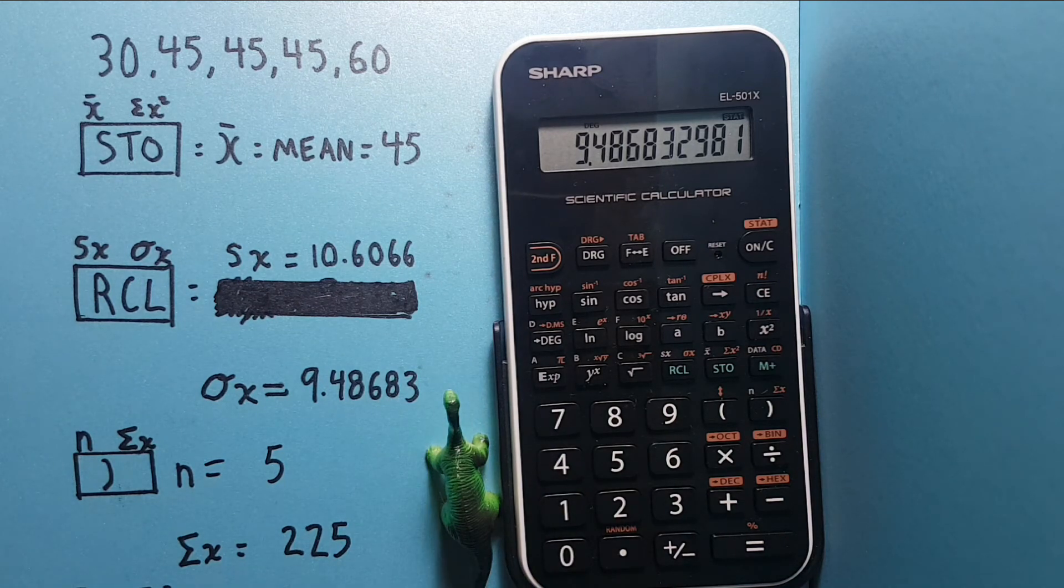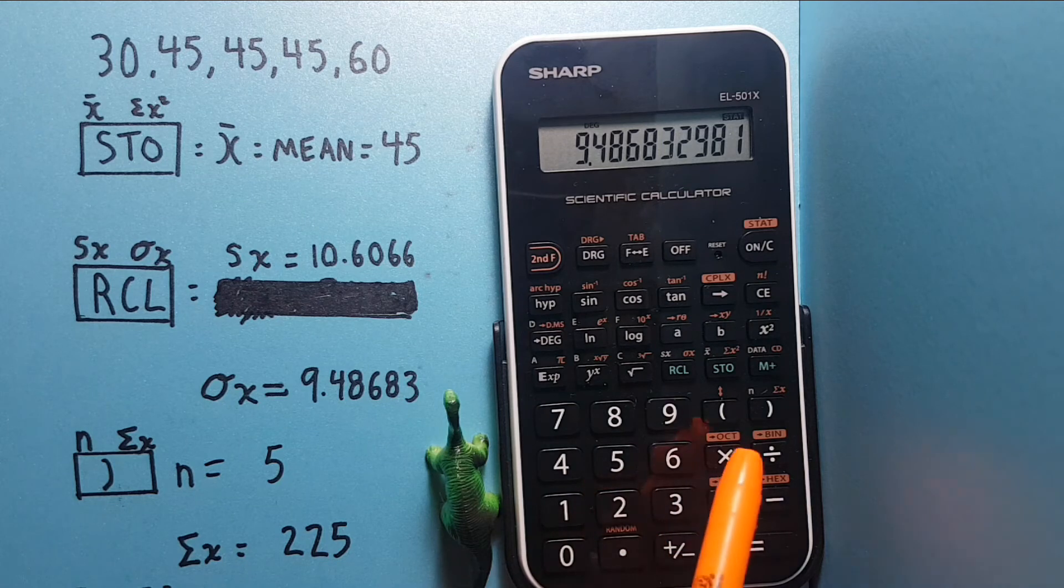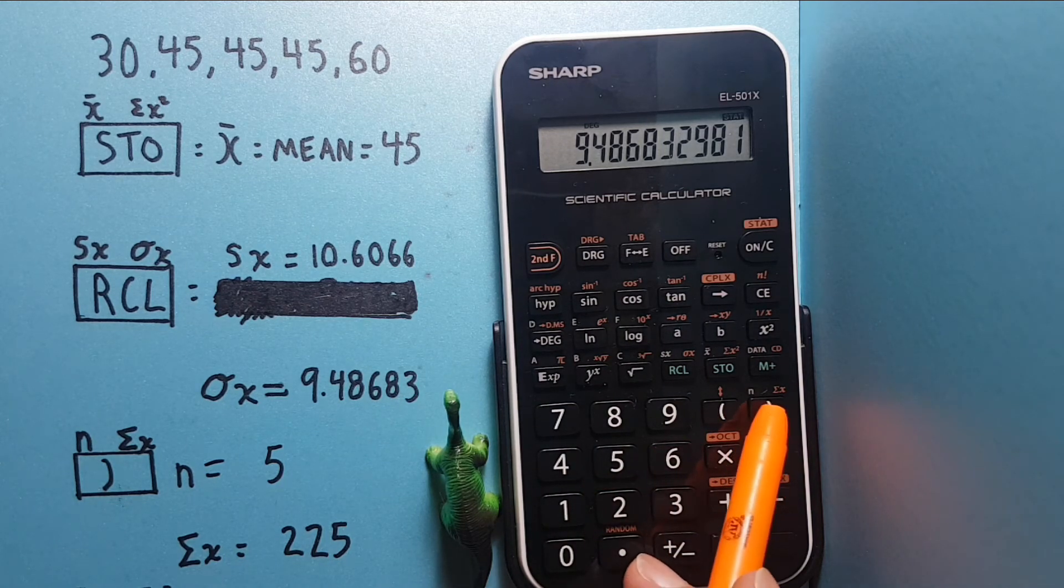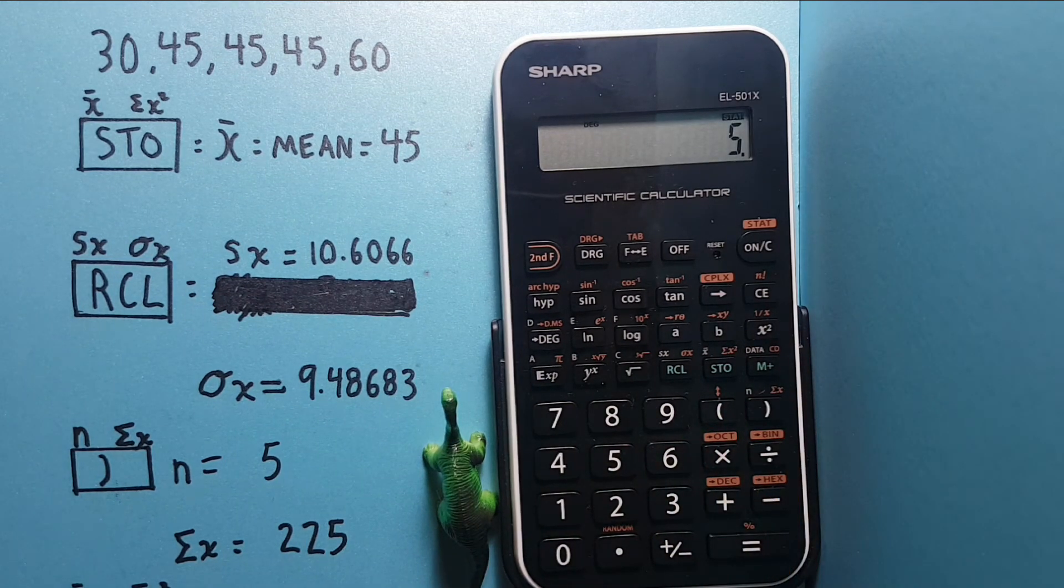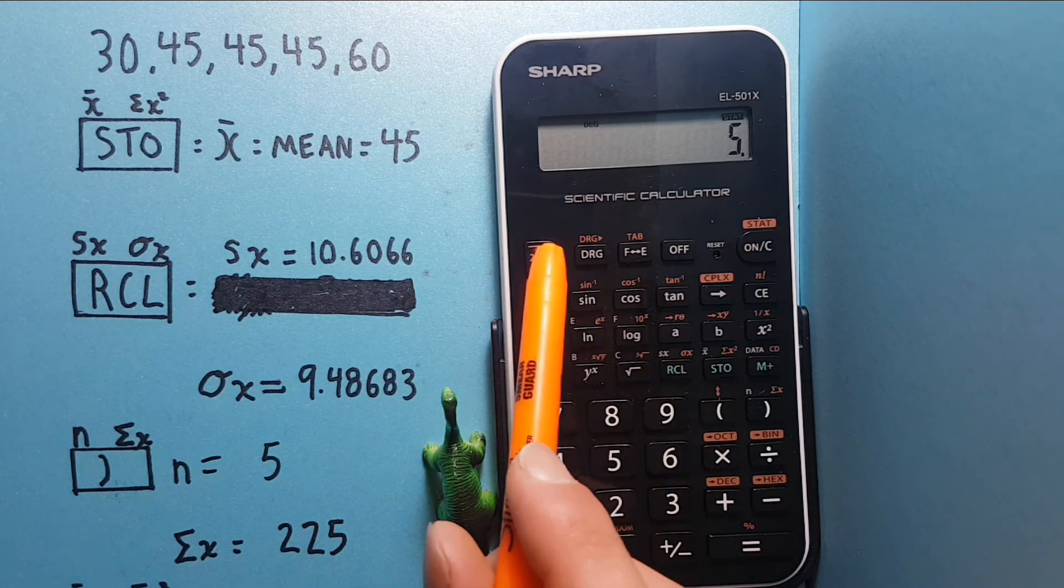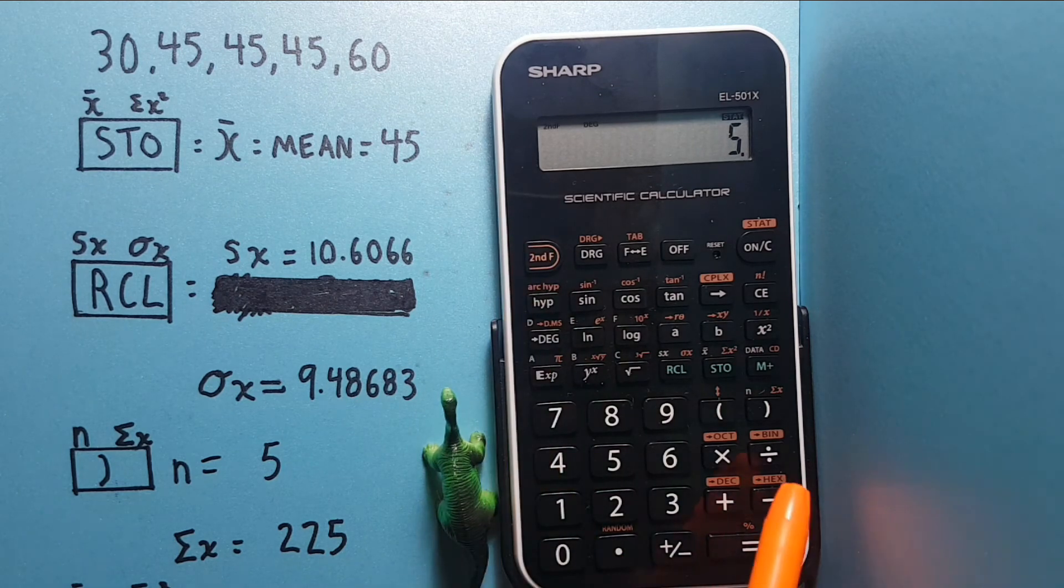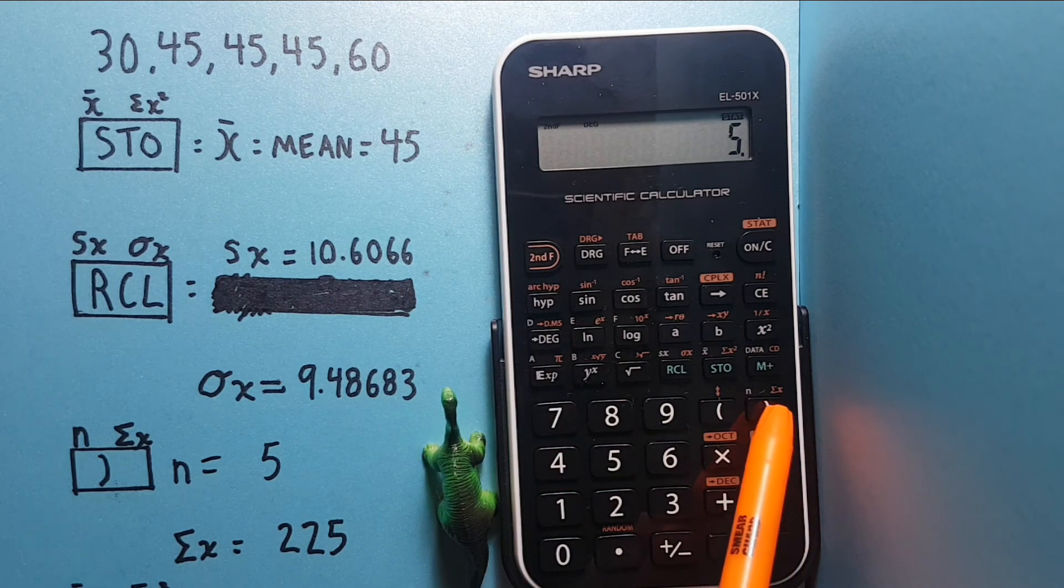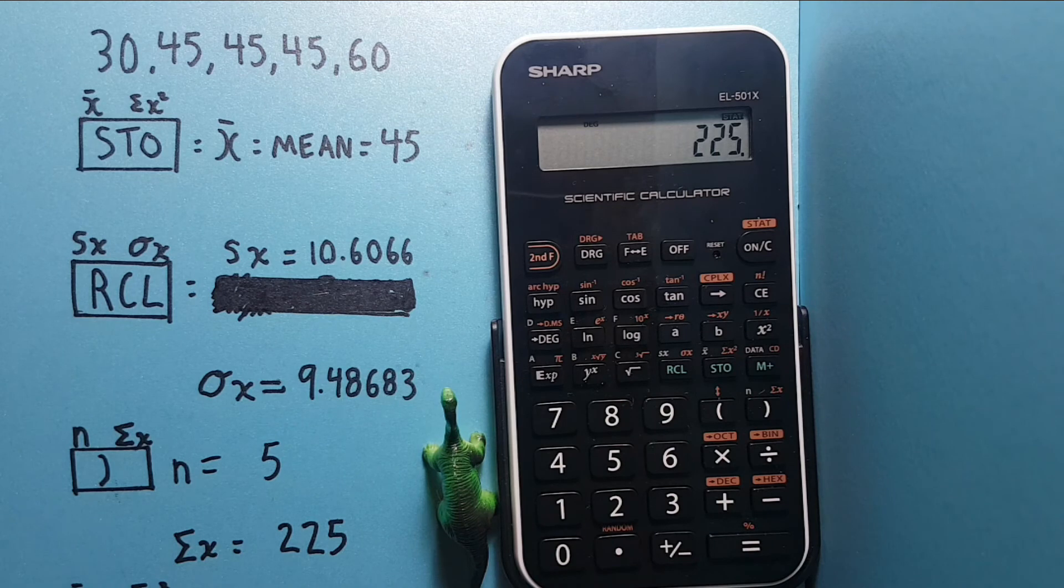If we wanted to double check how many numbers we had in our data set, we could press this right bracket with the N over top, and see that we have five numbers in our data set. If we want to see the sum of our data set, we would press the second function key, and then that same key, and see that the sum of all of our numbers is 225.